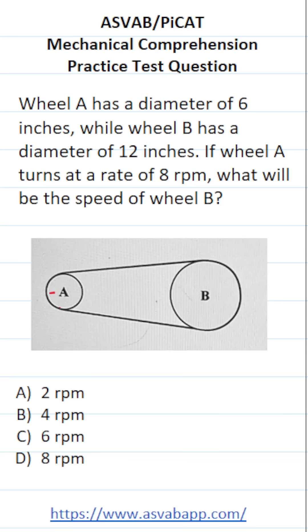So let me go ahead and label everything. We know Wheel A has a diameter of 6 inches and it rotates at a rate of 8 RPMs. Wheel B has a diameter of 12 inches, and we want to know how quickly it's rotating.